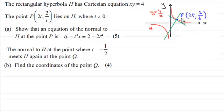And we have this point here, P, with coordinates 2t, 2 over t, t not equaling 0. And we had to show that an equation of the normal to the curve H at the point P was ty minus t cubed x equals 2 minus 2t to the power 4.